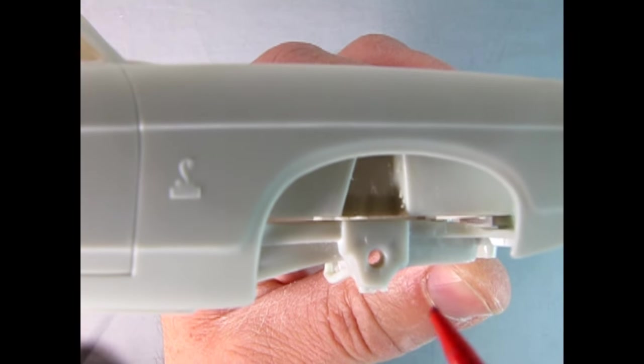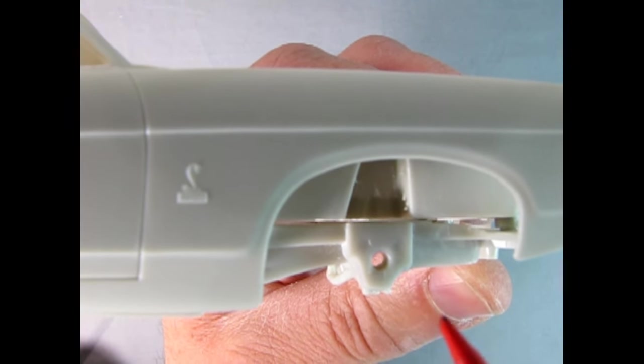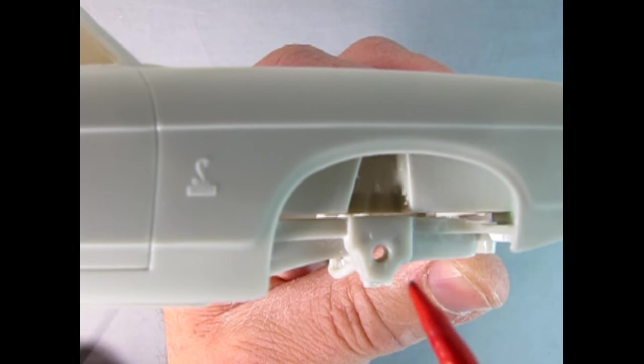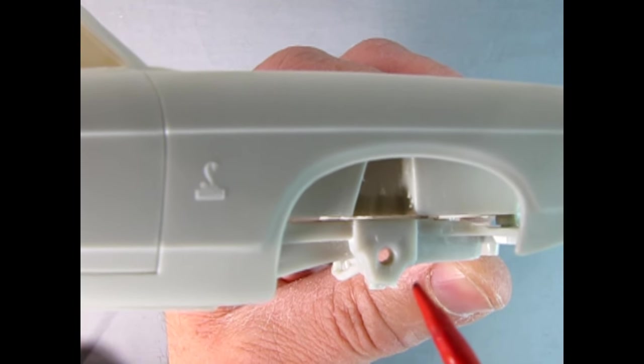This would explain why the wheel height seems too high in the front on later editions, and why there is a gap between the chassis pan and the lower fender aprons.